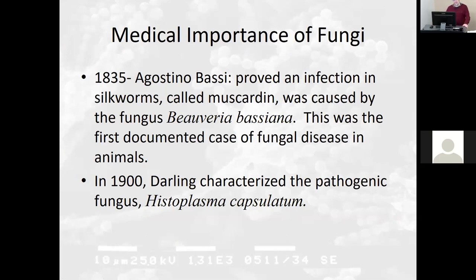Here's a little history: Agostino Bassi, in 1835, proved that silkworms had this muscardine infection caused by a fungus — Beauveria bassiana. If you find something, you get to name it after yourself, so that's where 'bassiana' came from. This was the first documented case of a fungal disease in animals.